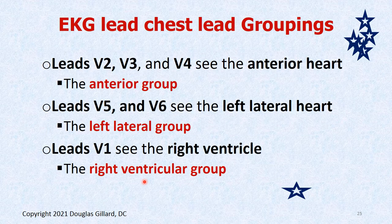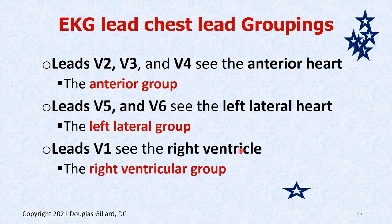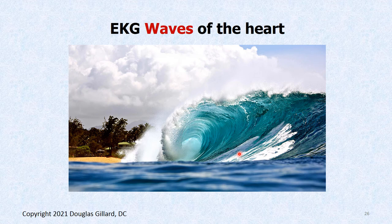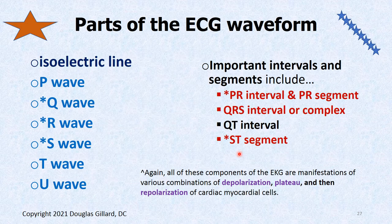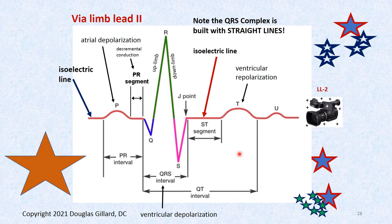Grouping it together: the anterior group that sees the anterior part of the heart is V2, V3, and V4. V5 and V6 see the left lateral side, and V1 sees the right ventricle. Now we're getting into the waves — you should remember this from previous lectures. You already should know the parts of an ECG.